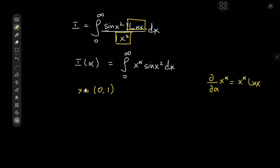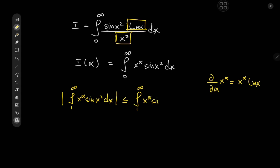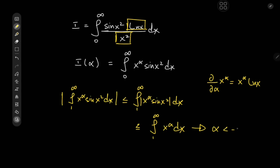But what about the integral from 1 to infinity? We'll analyze the absolute value of the integral from 1 to infinity of x^α times sine(x²) dx. This is less than or equal to the integral from 1 to infinity of |x^α times sine(x²)|, which is less than or equal to the integral of x^α dx, since x^α is a positive real number and sine(x²) oscillates between 0 and 1. This converges for α less than negative 1. That's a dominated convergence type analysis, and now we can proceed with our plan.